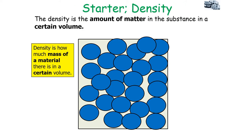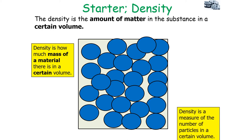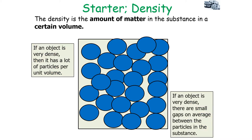Density is the amount of matter in a substance in a certain volume. So density is a measure of the number of particles in a certain volume, or a measure of the space between particles in a certain volume, or a measure of how spread out the particles are in a certain volume. If an object is very dense, there are small gaps on average between the particles, because there are lots of particles per unit volume.